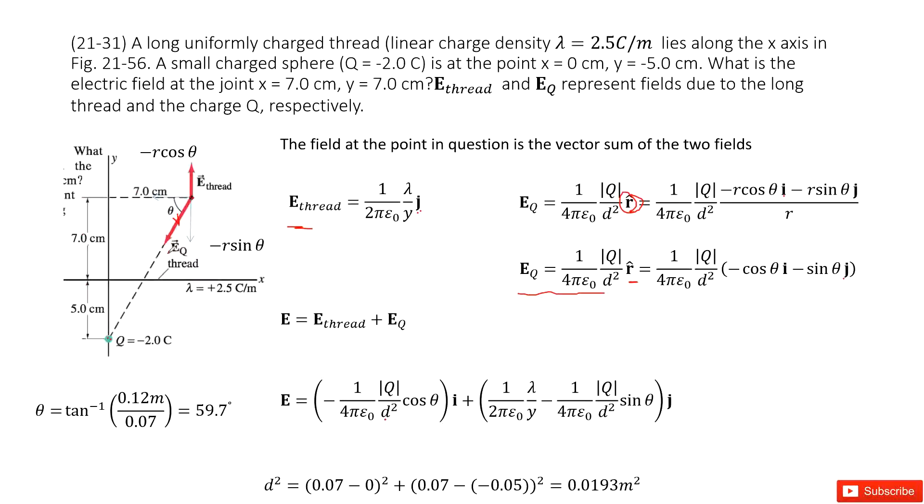One side is 7 cm, another side is 7 cm plus 5 cm, which becomes 12 cm. Using this side squared and that side squared, we get d squared. The answer is 0.0193 m².